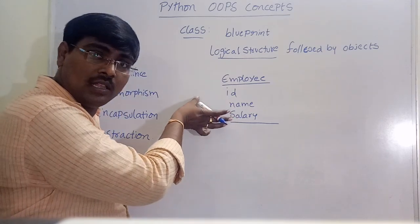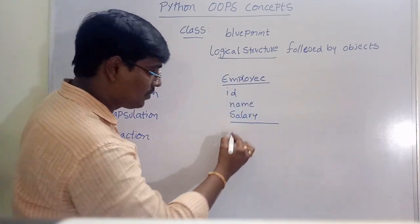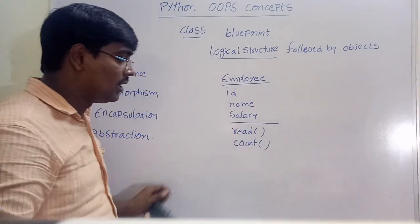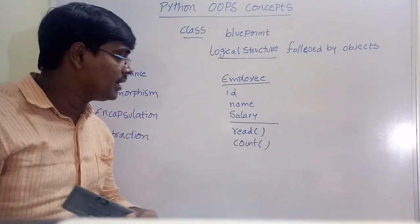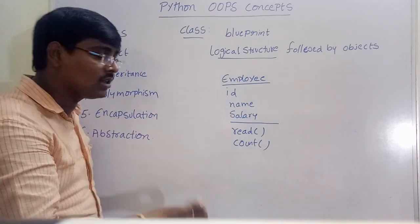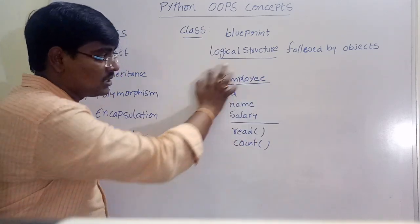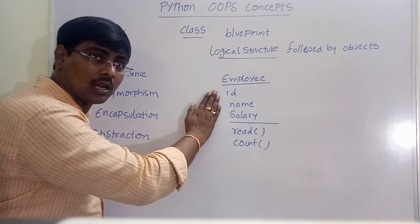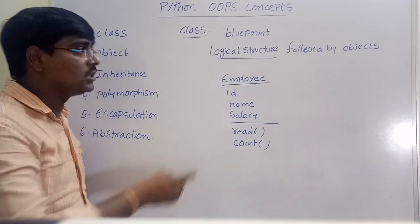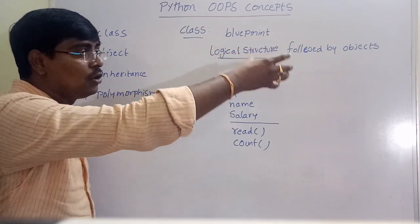Along with these attributes, a class contains some functions or methods for accessing these values — for example, methods to read or count the salary, read the ID of the employee, and so on. This is a class — a logical structure specifying a real world scenario — followed by objects.